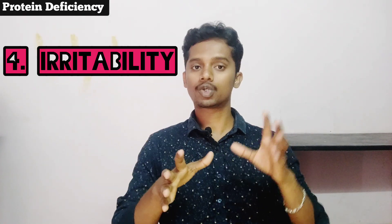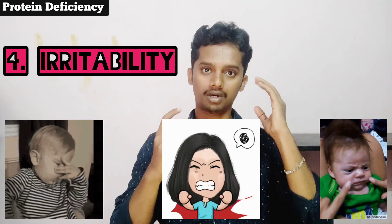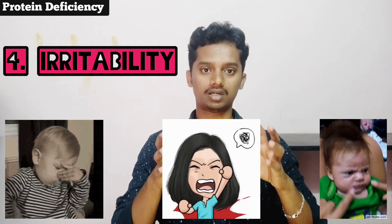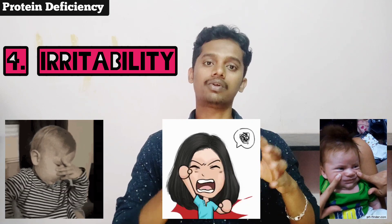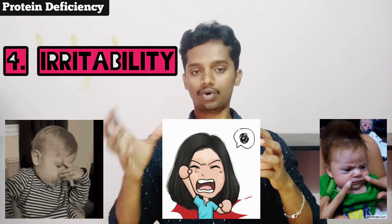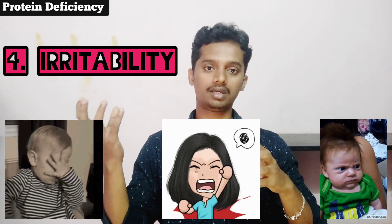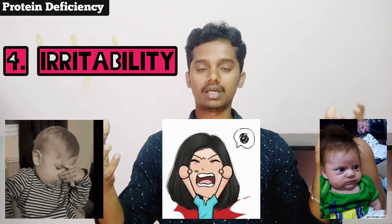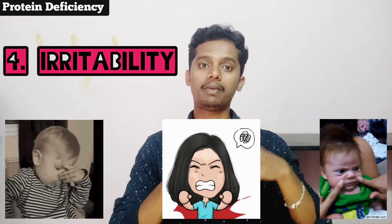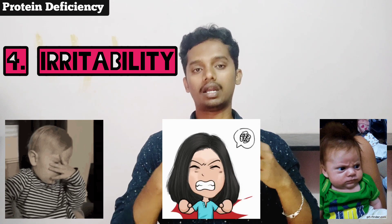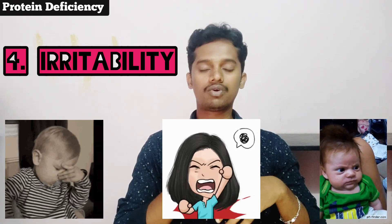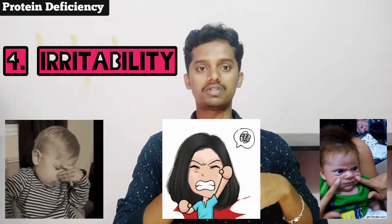The fourth condition is irritability. When protein is reduced, mood changes occur because emotional hormones are impaired. At one time you will be very happy, and at another time very angry. This mood instability means you can identify that a person is suffering from protein deficiency.